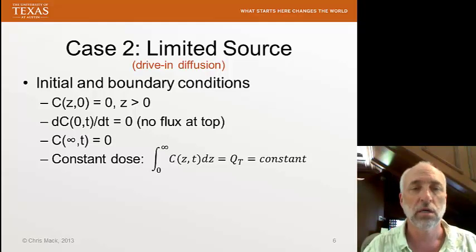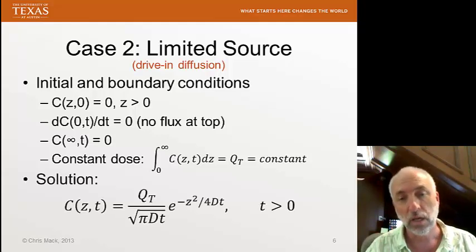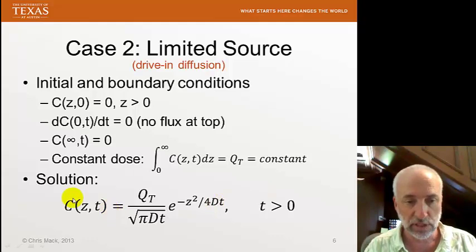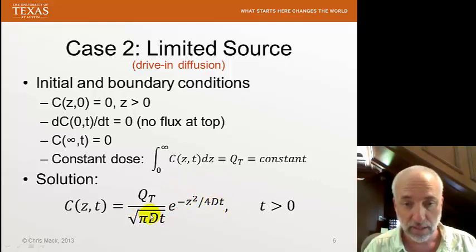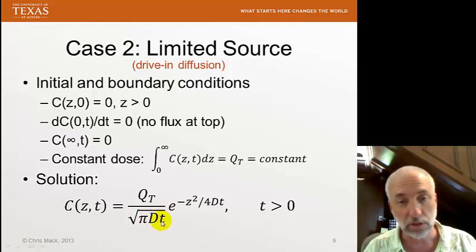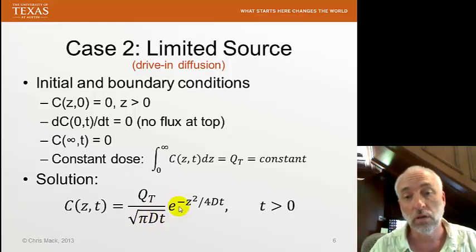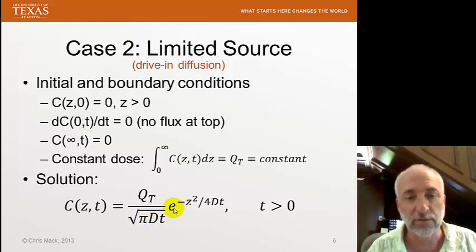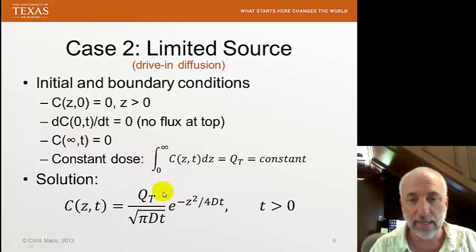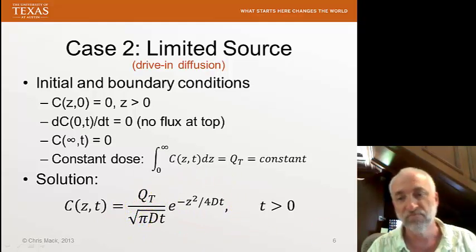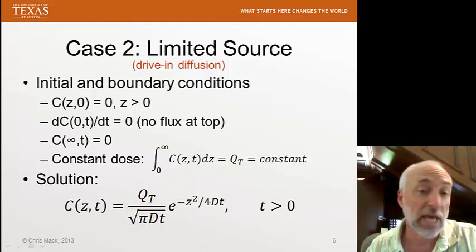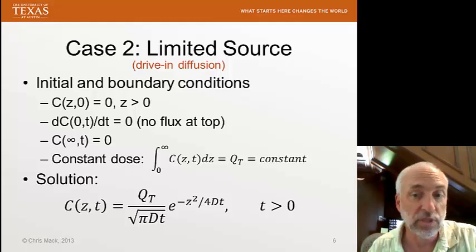The solution to our diffusion equation for the limited source case is a Gaussian. Concentration as a function of z and t will look like a Gaussian: e to the minus z squared over 4Dt. The diffusion length, the square root of Dt, looks just like the standard deviation of the Gaussian — with a factor of 2 — and the total dose Qt scales the whole function. So we have a Gaussian solution for the case of a limited source.